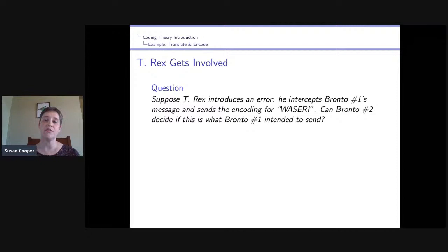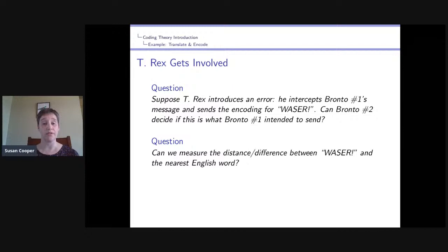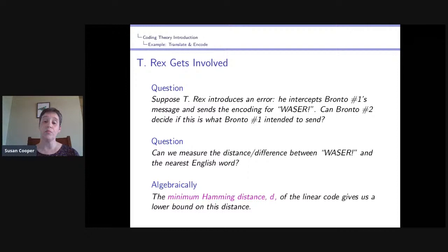So let's see what we can do with that T-Rex. Let's suppose that T-Rex introduces an error. He's going to intercept Brontosaurus number one's message, and he's going to send the encoding for Wasser. So in Wasser, he changes the T to an S. And our question is, can Brontosaurus number two decide if this is what Brontosaurus number one intended to send? Another question that we could ask is, can we measure the distance or the difference between Wasser and the nearest English word? And so to look at these problems in a mathematical way, we introduce a number, which we're going to call d. And its formal name is called the minimum Hamming distance of our linear code. And what it does is it gives us a lower bound on the distance. The larger the number is, the stronger our code is, because we have more room or distance to decide the difference between what was sent and any error that might have occurred.